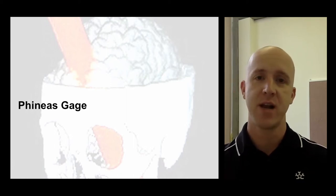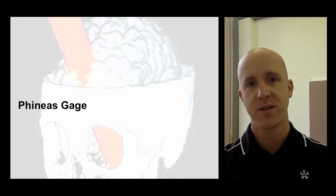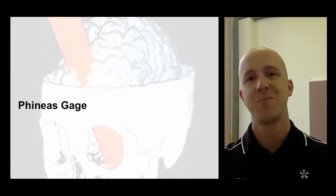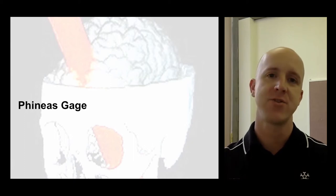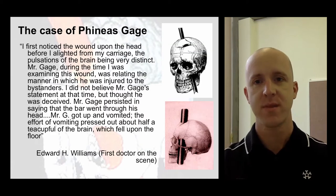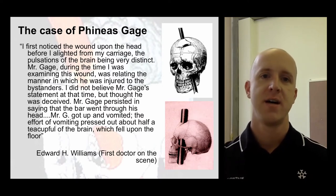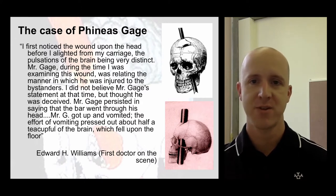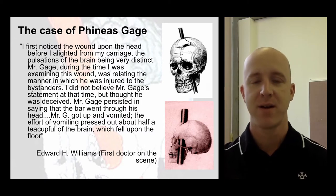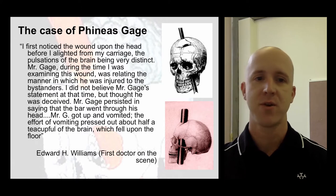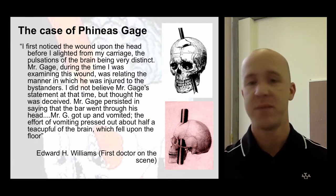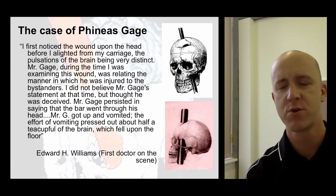Phineas Gage was very lucky in some respects. He did lose an eye, lose some teeth, and lost a big chunk of skull. The tamping iron was found quite a long way away. Because of the speed of the injury, it was assumed it might have been a clean injury, but it may not have been and may have become infected. The first doctor on the scene noted the wound before alighting from his carriage, with the pulsation of the brain being very distinct. Mr Gage was relating the manner in which he was injured. The doctor didn't believe him at first, but Gage persisted in saying the bar went through his head. He then vomited, and the effort of vomiting pressed out another bit of brain that had been separated, which fell on the floor — a pretty gruesome situation.